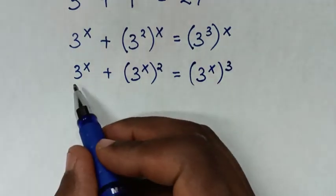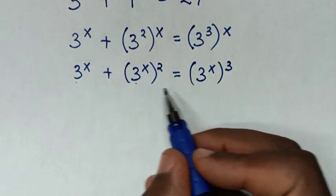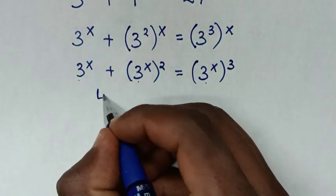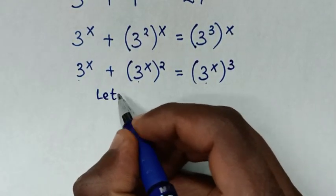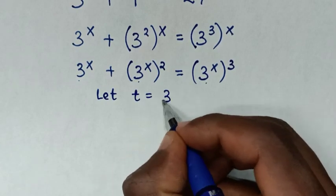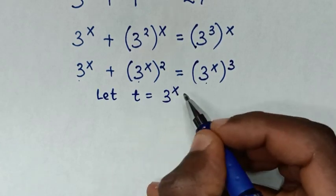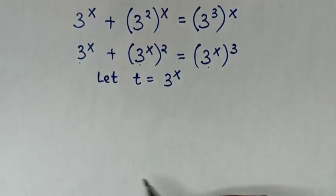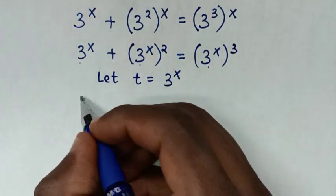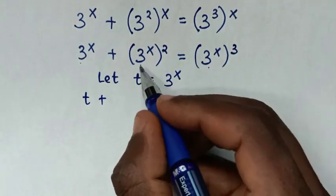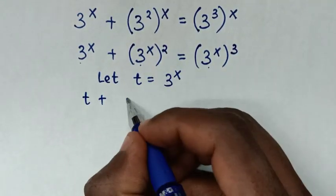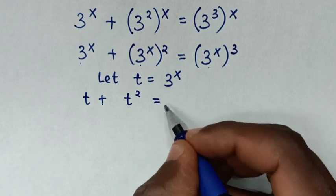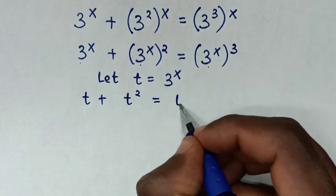In here, 3 power x is common, so we let t equal to 3 power x. Then our equation will be t plus t squared is equal to t cubed.